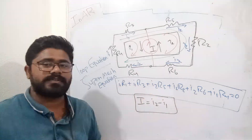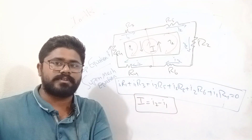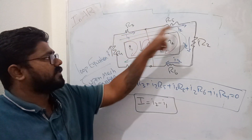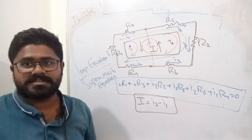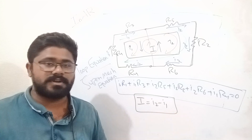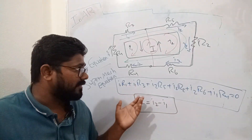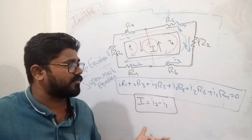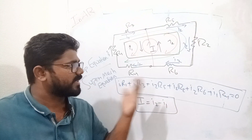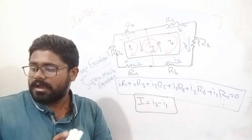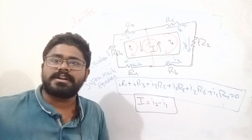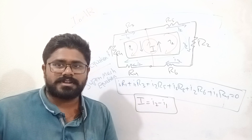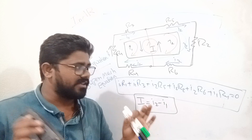With these two equations we can solve for the values of I1 and I2. Then we can go on to find the voltage drop across each individual resistor, the power consumed by each individual resistor, and the total energy consumption of the circuit. The application of this loop current method is also in non-planar circuits, but non-planar circuits will not be explained in this video.